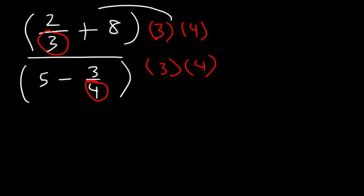So what's 12 times 2 thirds? If we write it separately, that's 2 thirds times 3 times 4. So notice the 3s cancel. And what you have left over is 2 times 4, which is basically equal to 8. So that's going to be the first term.